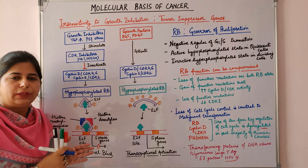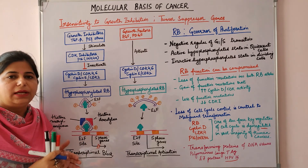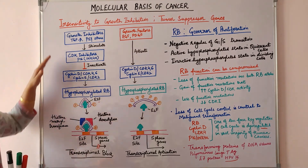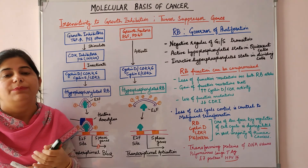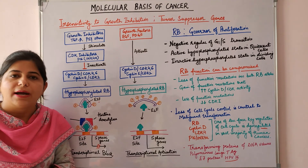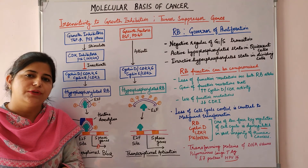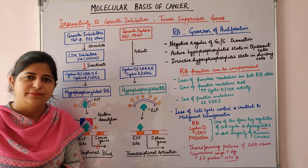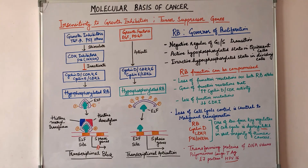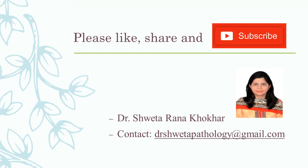In this video, we studied about the RB gene, which is a tumor suppressor gene. In the next video, we will continue with the topic of insensitivity to growth inhibition and study about another tumor suppressor gene, TP53, which is the guardian of the genome. I hope today's video was useful. Please subscribe to the channel and like and share the videos.